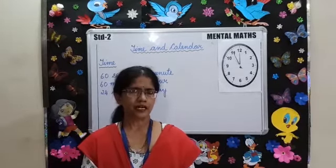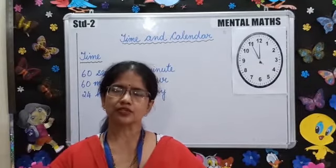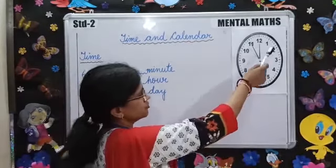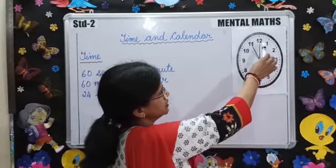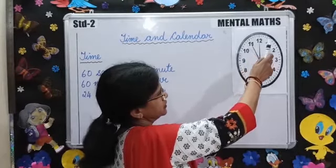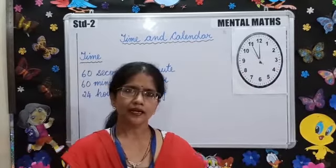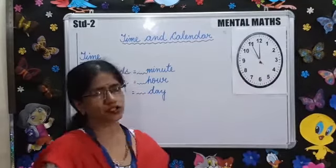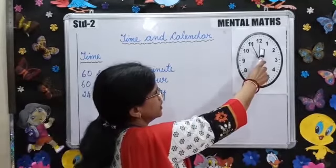We measure time by using clocks. Have you seen a clock, children? Yes, you all have seen a clock. Now, the face of a clock is called the dial, and the dial is divided into 12 equal parts. A clock has two hands: a long hand and a short hand. The long hand is called the minute hand and the short hand is called the hour hand.